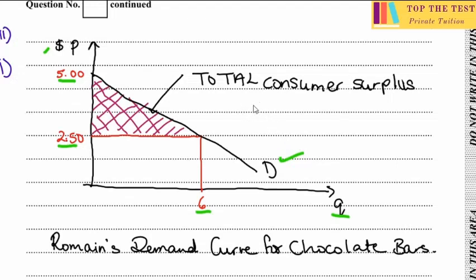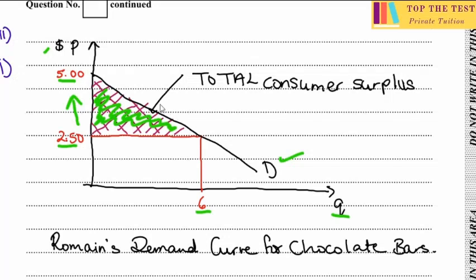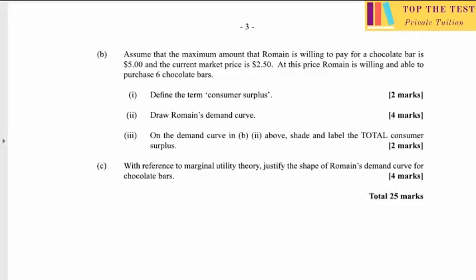Consumer surplus is the area above the price line but bounded by the demand curve. Since the price is $2.50, the area above that price line but below the demand curve represents total consumer surplus. Make sure to label it with an arrow and shade it to earn the two marks.